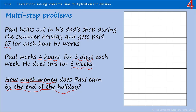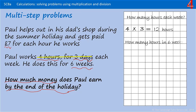Now we've established the numbers, we need to work out which calculations to do. There's more than one order to do this. I'm going to start by finding out how many hours Paul works a week. We know that each day he works four hours and that he does three days every week. So four hours for three days — that's four times three, which is 12 hours a week.